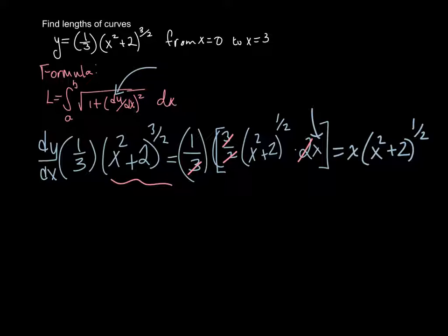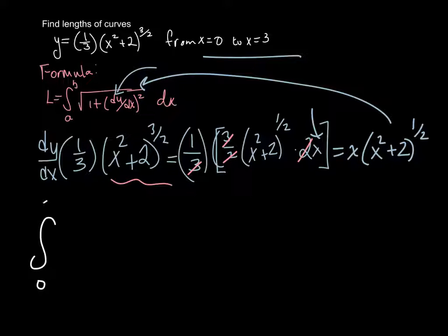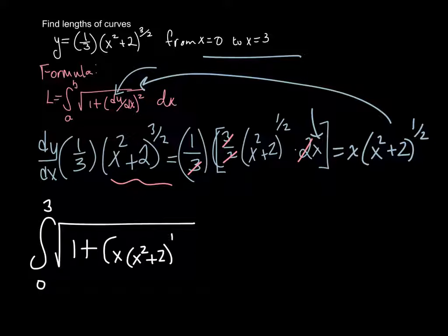And now I take and I plug this into my formula. And I'm going from 0 to 3 and as I can see, there's no problem plugging in x equals 0. So I can just use that formula straightforward. So from the integral from 0 to 3 of the square root of 1 plus the derivative I just found, which is x times x squared plus 2 to the 1/2 power squared.